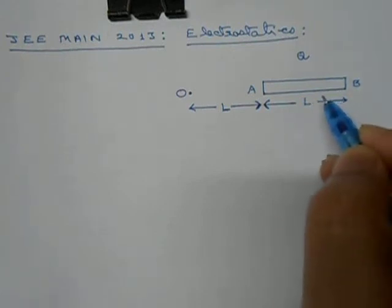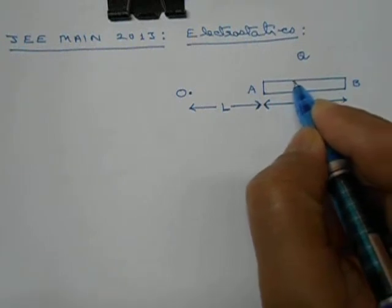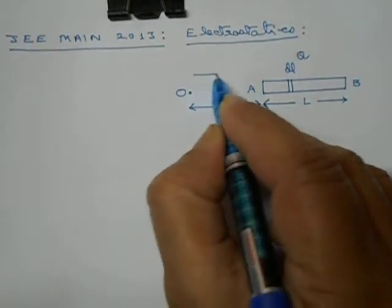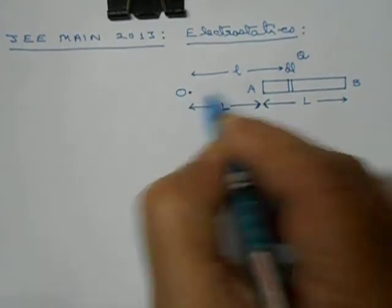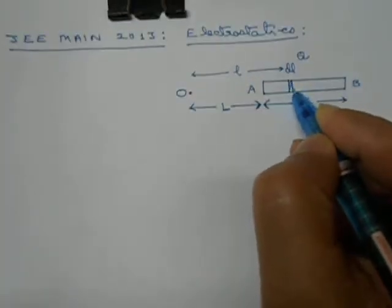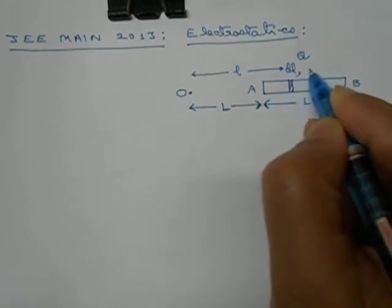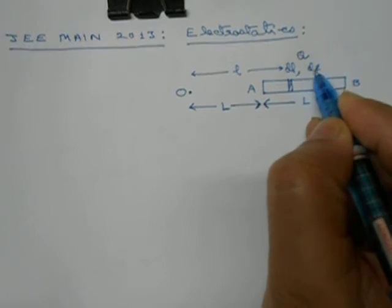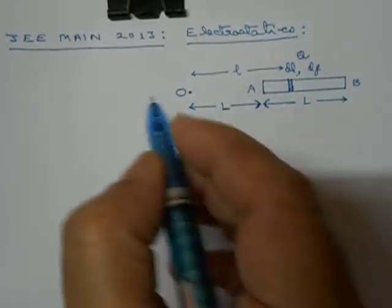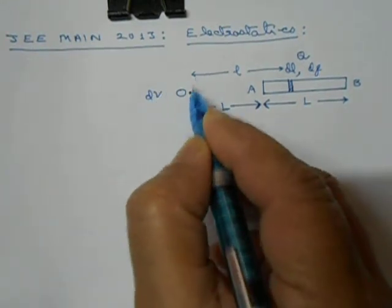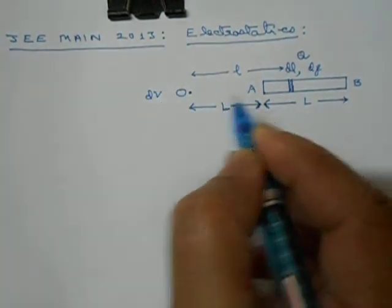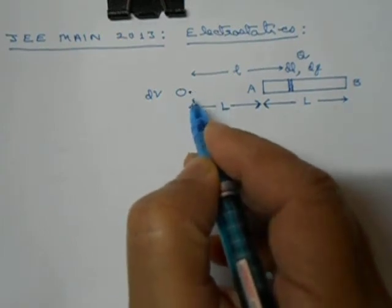The approach to solve this question is as follows: we take a sample element of length DL at a distance of small l from the end. This element will have some charge DQ on it. We find the potential at point O due to this charge DQ, call it DV, then integrate DV with proper limits to get the total potential at O.